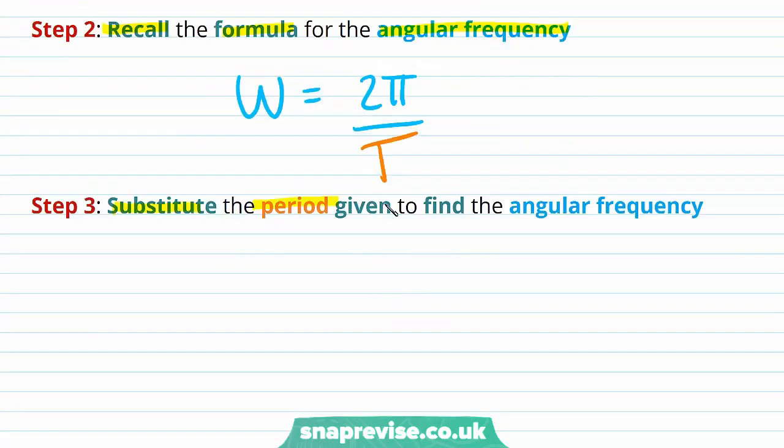We can now substitute the period given to find the angular frequency. So omega is equal to 2 pi divided by our time period that we were given, which is 0.6. And we find that omega is equal to pi divided by 0.3 radians per second. And we're going to keep it in this form because we're going to use it in the later calculation.